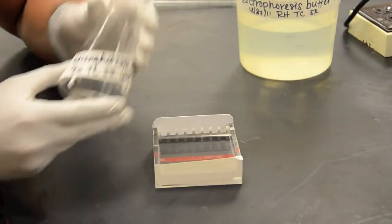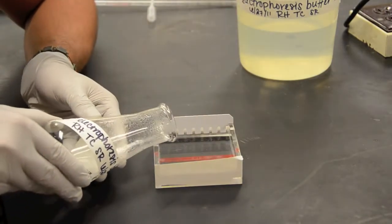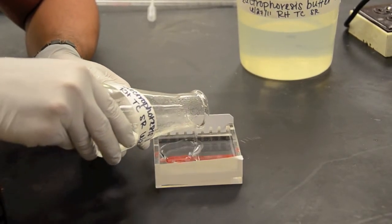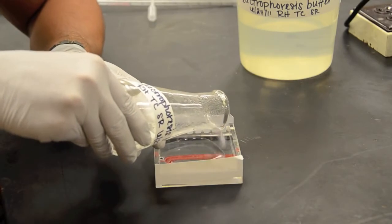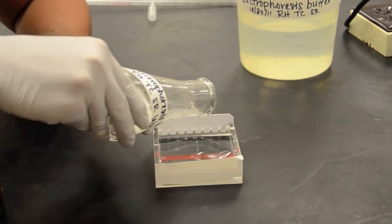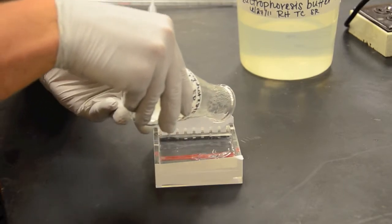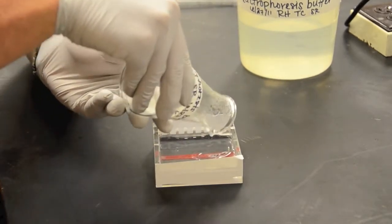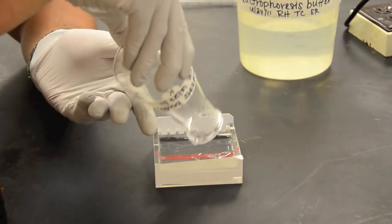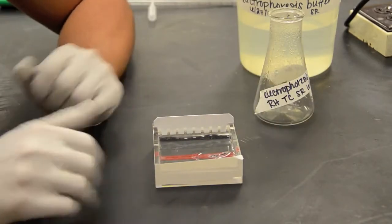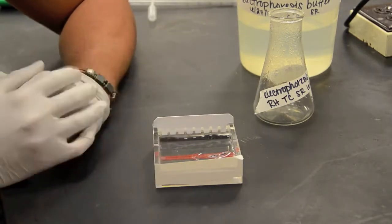So now that we've got it securely in place it is time to add the agarose gel. Make sure we get it uniform throughout, make sure it touches our corners here. Alright and what we're going to do is let this sit for 30 minutes until it solidifies and turns into our solid agarose gel.